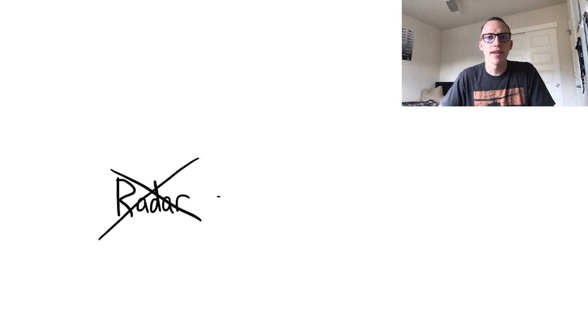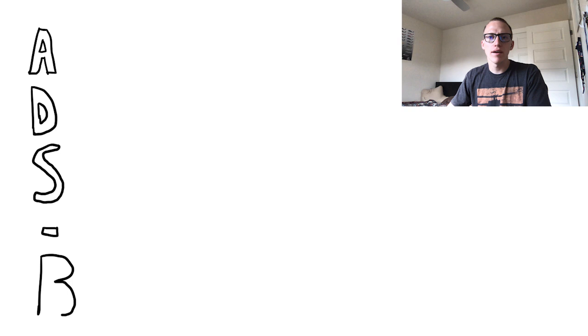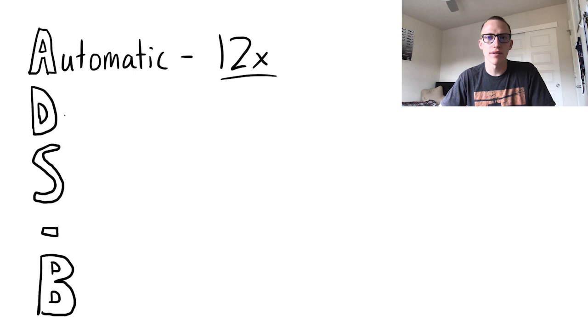To understand ADS-B, we can break down the acronym. First we have A, which stands for automatic. Aircraft with ADS-B out will automatically transmit their position 12 times more often than radar usually detects.